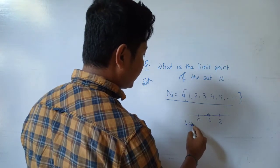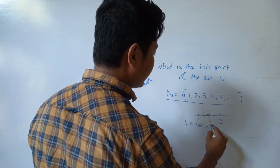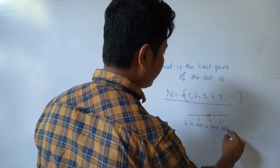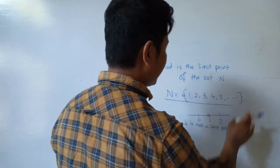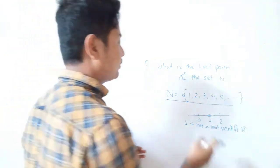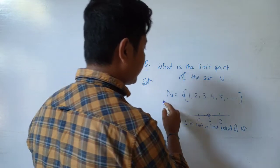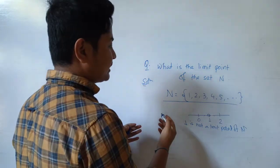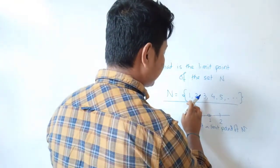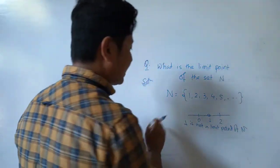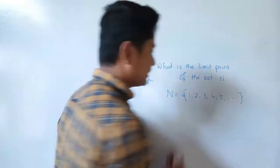So one is not a limit point of the set of natural numbers. Likewise, no point of the natural numbers is a limit point. Therefore, the set of natural numbers has no limit point.